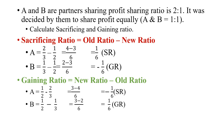Refer to book page number 4.39, first 4 exercises. This is very important because the treatment of goodwill, reserve, and all other items depends on correctly calculating the sacrificing ratio and gaining ratio. If you make even a minor mistake here, the entire sum will be wrong. So be careful and thorough while calculating sacrificing ratio and gaining ratio. Have a nice day, thank you.